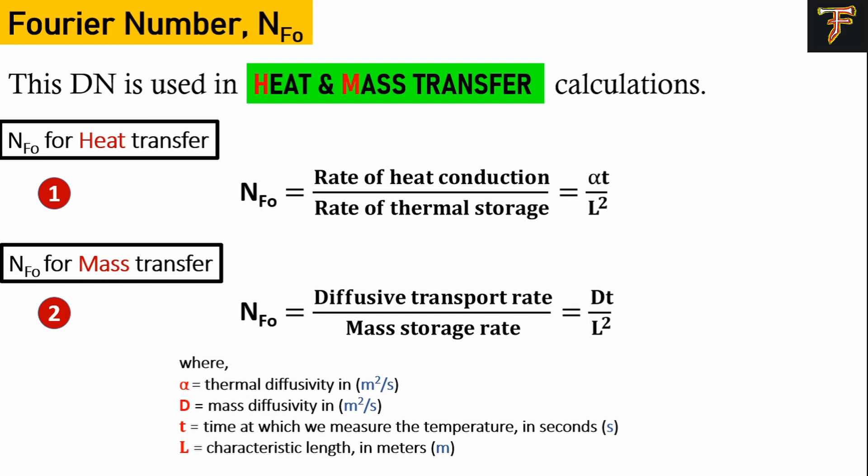We use this dimensionless number in transient heat transfer calculations, but in some cases also in mass transfer. Fourier number equals the rate of heat conduction to rate of thermal storage - how heat conducts through a material versus how heat stores in that material. Based on Fourier number values, you can determine whether to use that material to transfer heat or store heat in the form of mCpΔT.